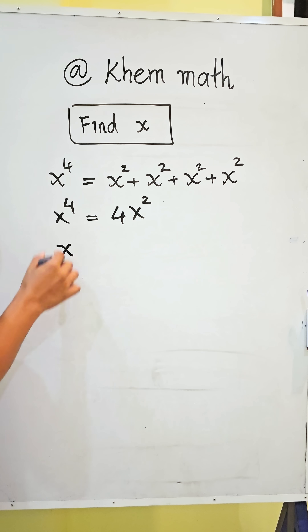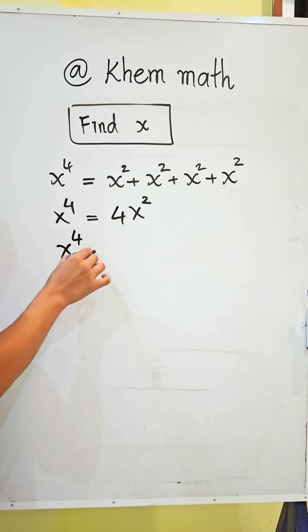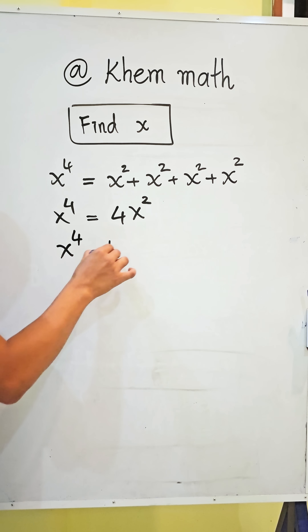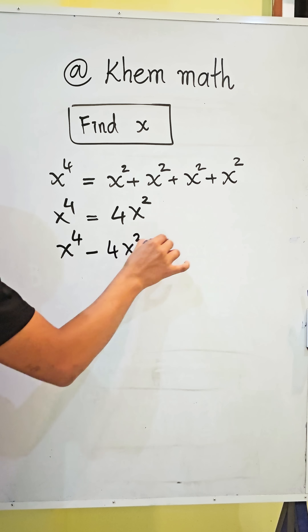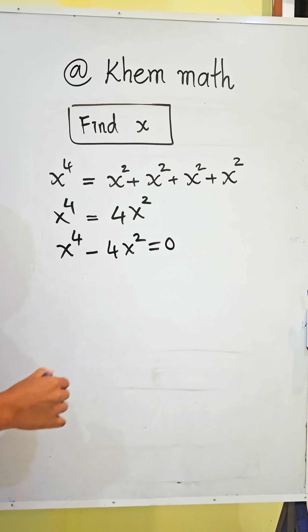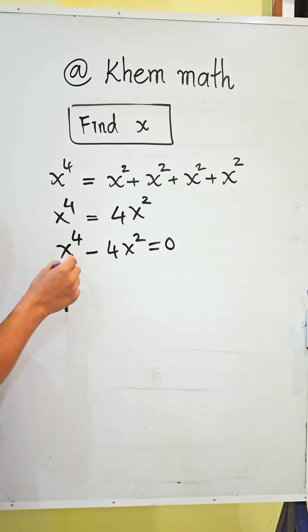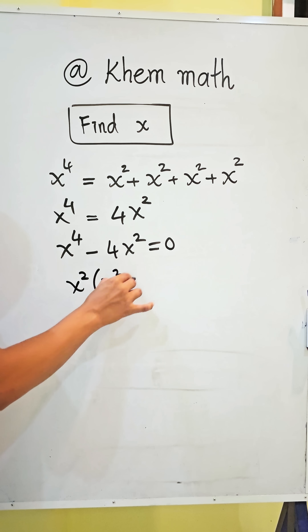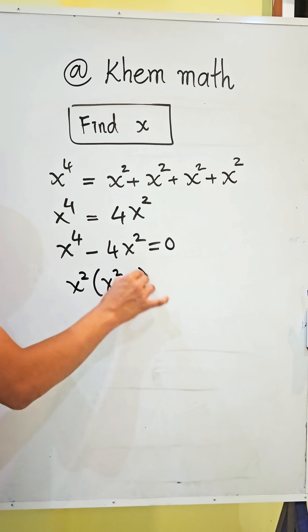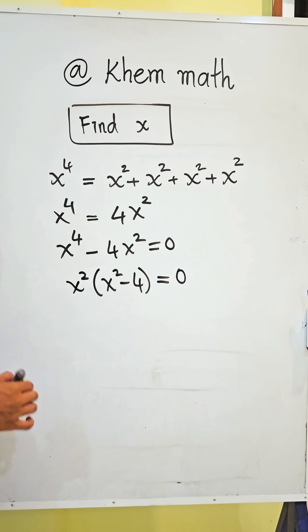So we get x to the power 4 minus 4x square equals 0. We take x square as a common factor, giving us x square times x square minus 4 equals 0.